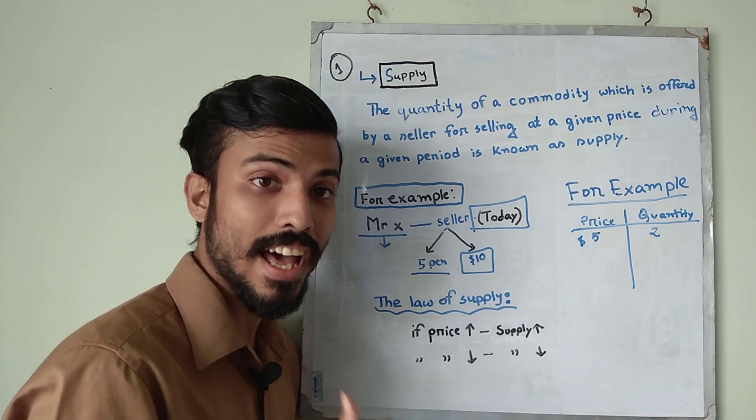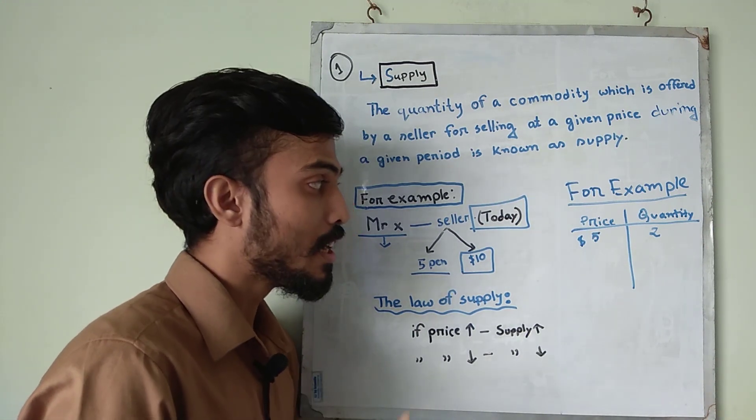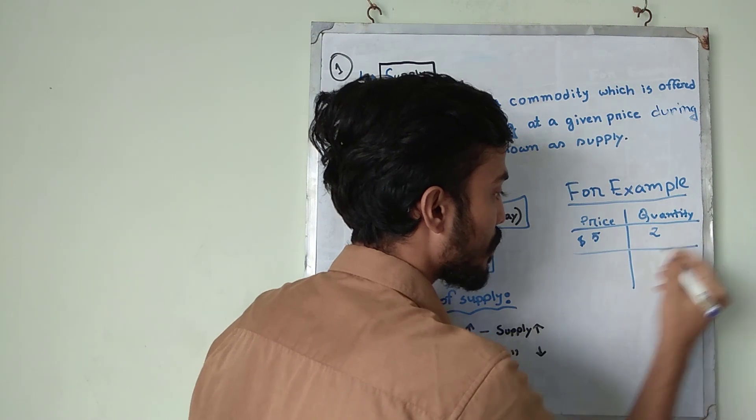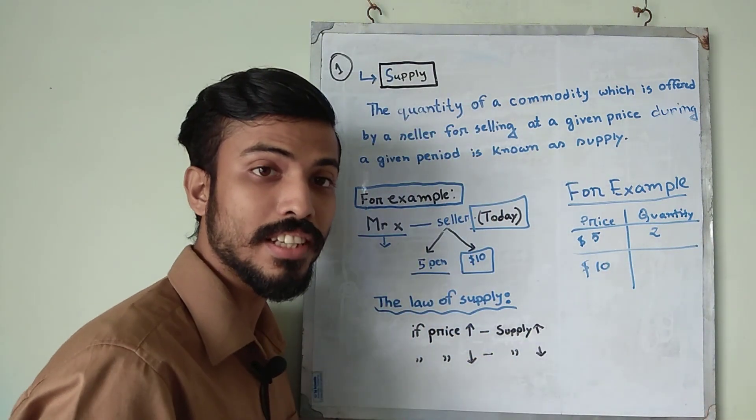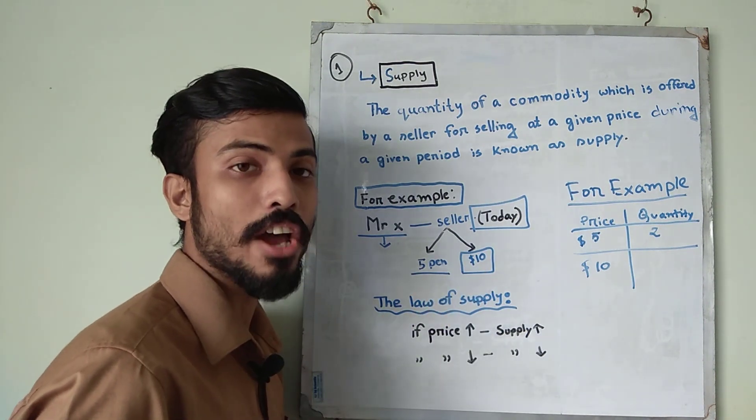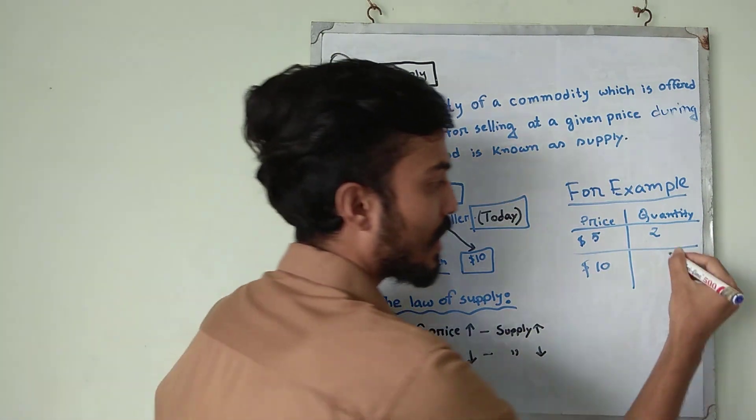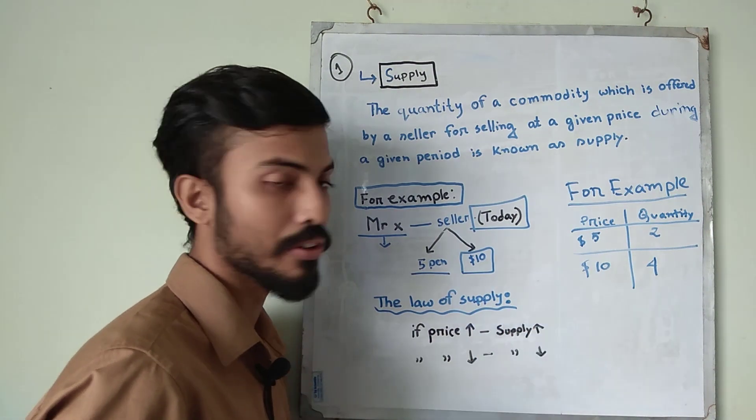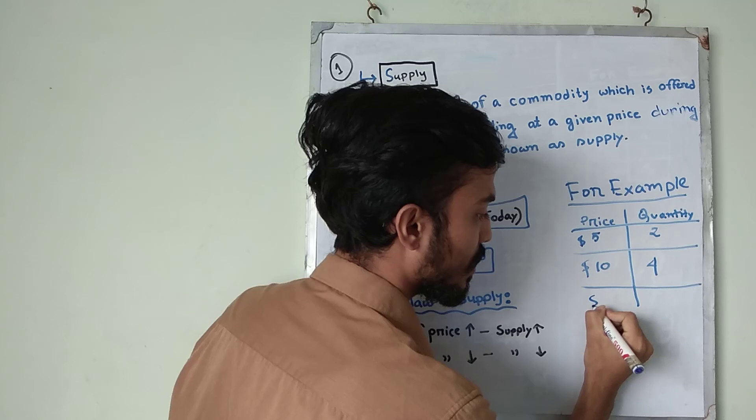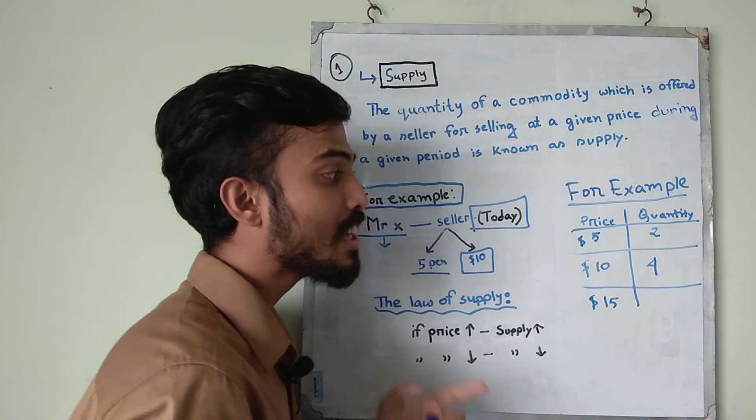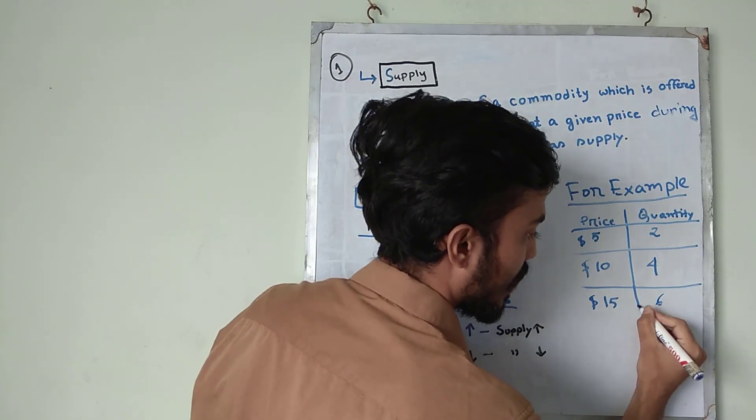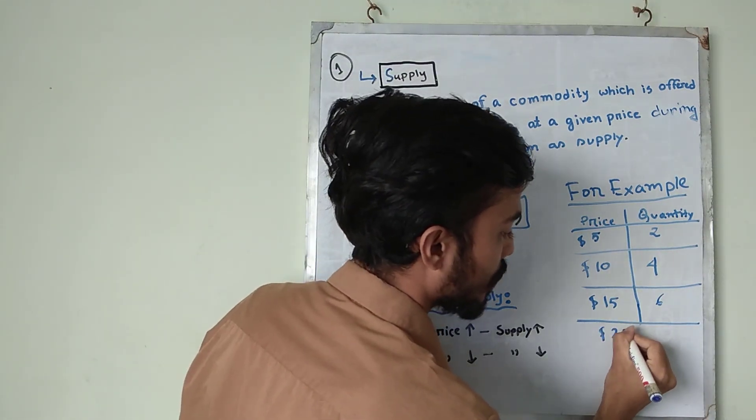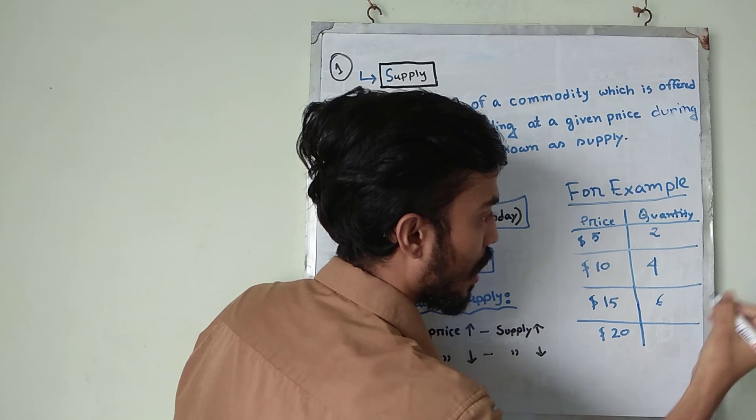This is obvious that you will increase your production because it will help you to generate extra profit. So if price increase to $10, then obviously you will increase your supply or quantity in order to get extra money or extra profit. Let's say 4 units, $10 and 4 units. Now if the price again increase, let's say $15 and again you will increase your supply. That means 6. And if the price again increase and then you will, let's say $20 the price increase and you will make 8 pens.